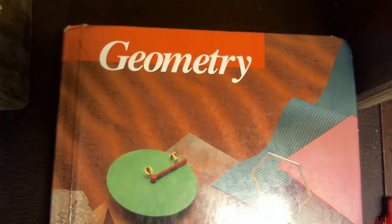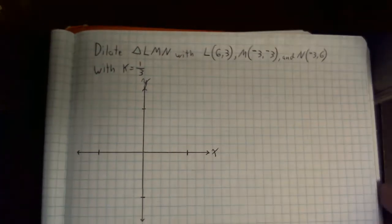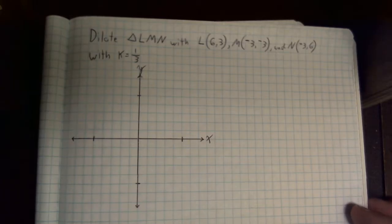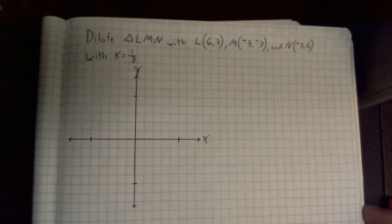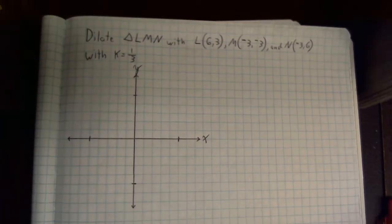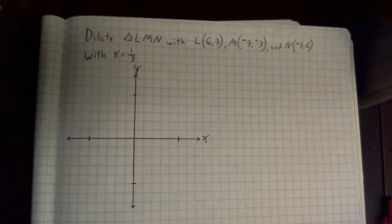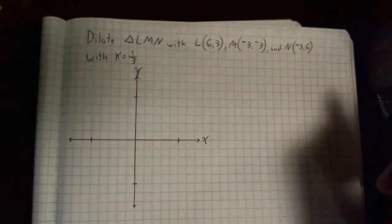One more example for you. This example says to dilate triangle LMN with L at 6, 3, M negative 3, negative 3, and N negative 3, 6. We want to use a scale factor of 1 third. So we notice 1 third, we should be thinking our shape should be getting smaller. I'm going to give you guys a second to try this one on your own if you want to pause the video, see what you come up with. Resume it and we'll go over the answer. All right, let's see how you did.